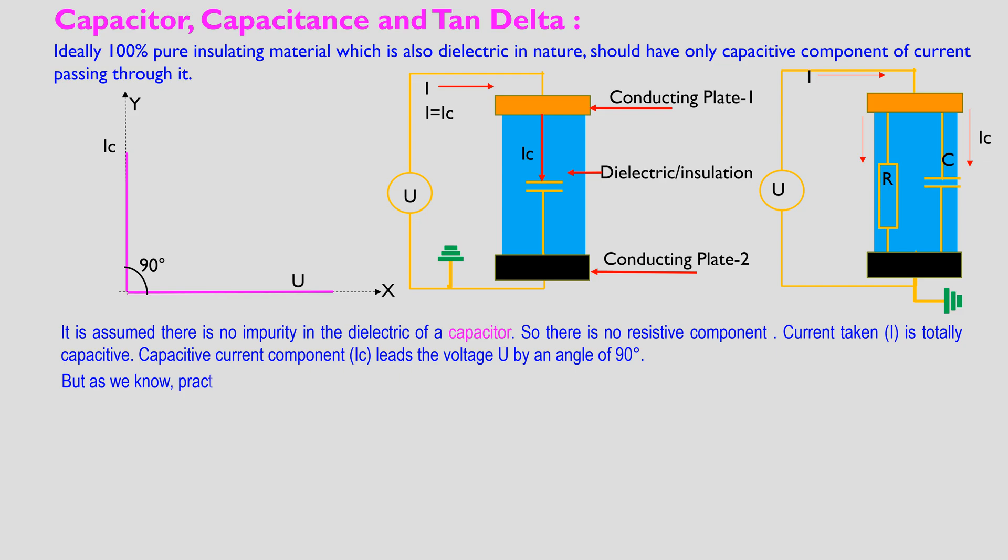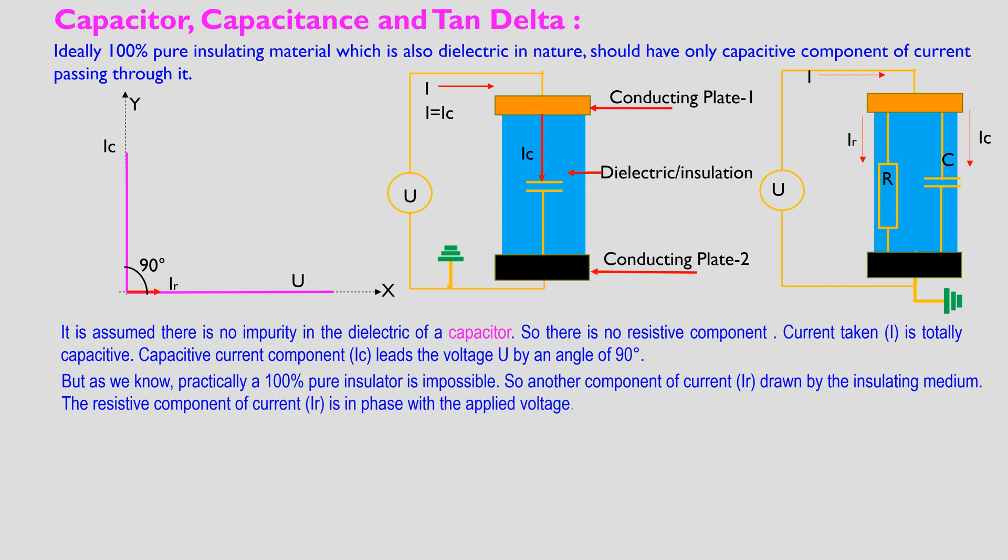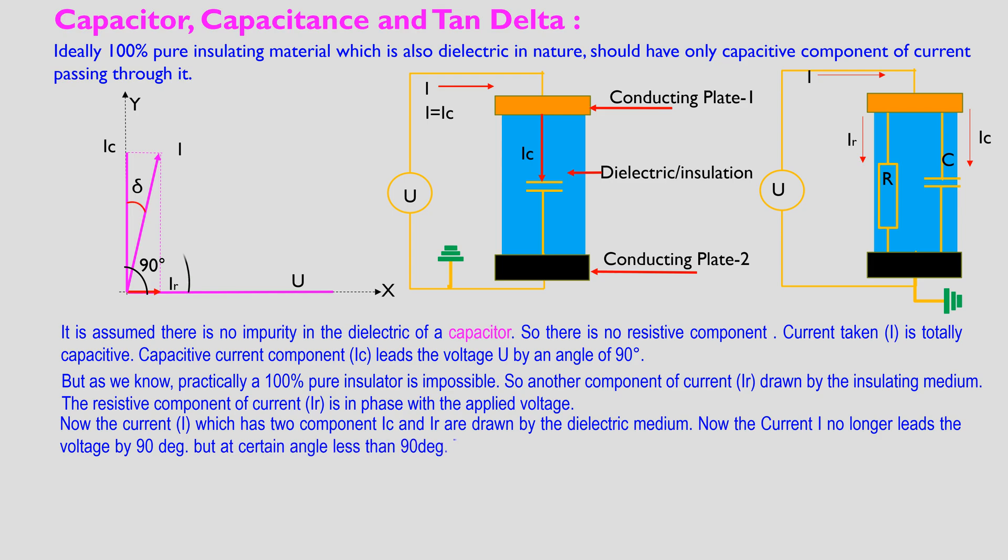But as we know, practically 100% pure insulation is impossible. So another component of current Ir is drawn by the insulating medium. The resistive component of current Ir is in phase with applied voltage U. Now the current I, which has two components Ic and Ir drawn by the dielectric medium, no longer leads the voltage by 90 degrees but at a certain angle less than 90 degrees.